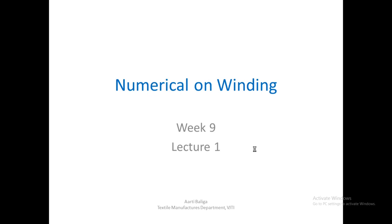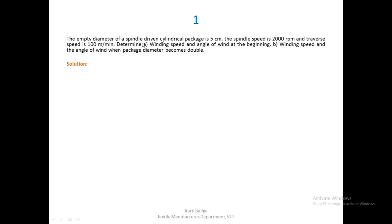Hello, today we shall see some numericals on winding. Coming to the first problem, we have been given the empty diameter of a spindle-driven cylindrical package as 5 centimeters, the spindle speed as 2000 rpm, and the traverse speed as 100 meters per minute. We are asked to find out the winding speed and the angle of wind at the beginning, and also when the package diameter becomes double.